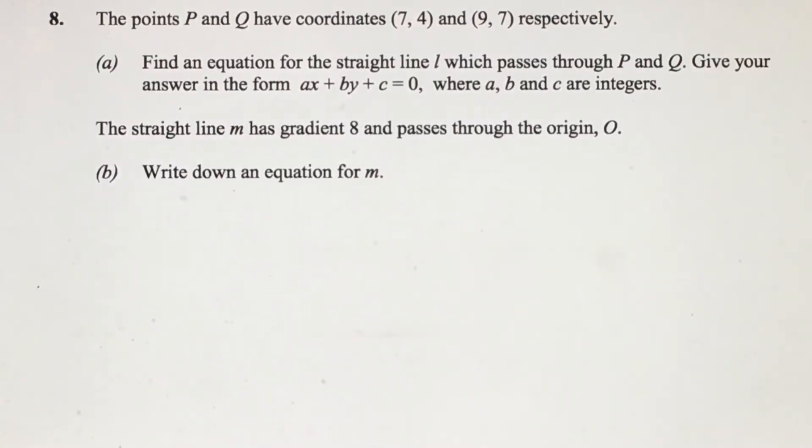Hi and welcome to Math Together. In this lesson we'll be focusing on 8a and 8b. 8a states: The points P and Q have coordinates (7,4) and (9,7) respectively. Find an equation for the straight line l which passes through P and Q. Give your answer in the form ax + by + c = 0, where a, b and c are integers.